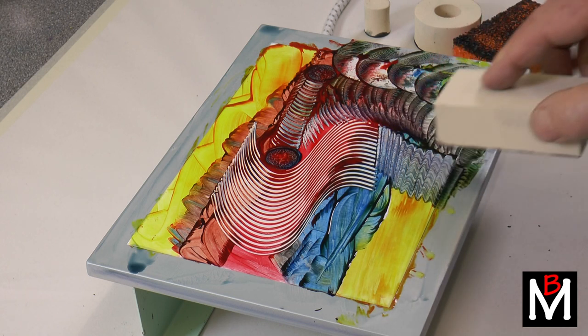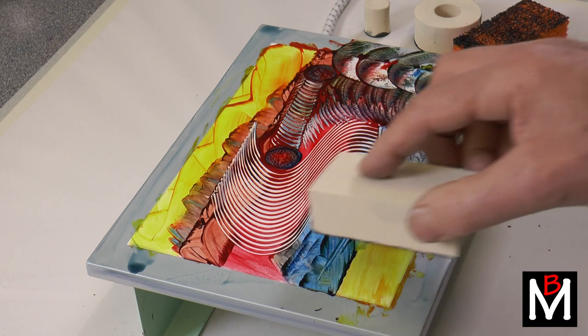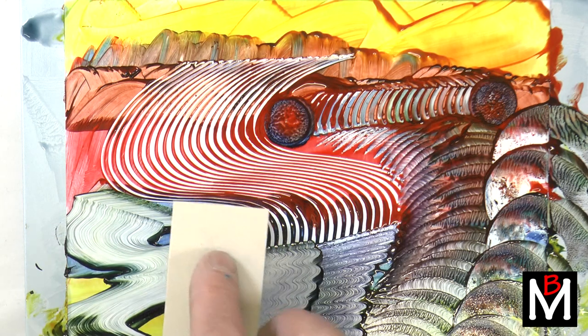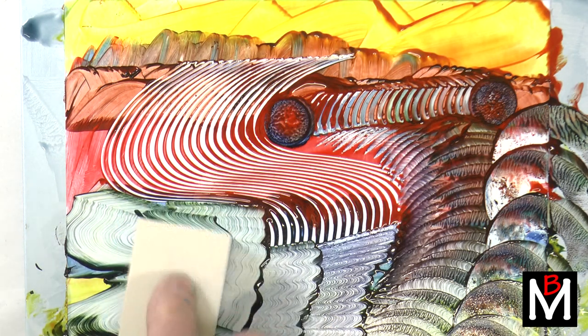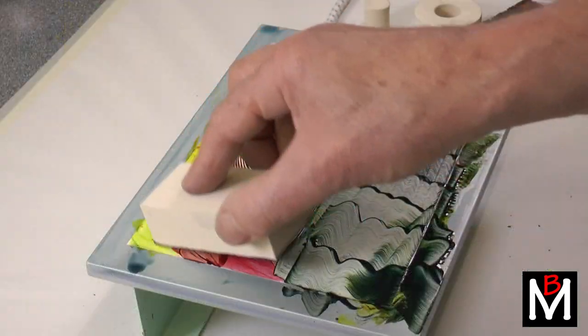This is the white block, rectangular sponge, pulling with that shorter edge. Of course you could use any of the edges actually, I'm just using that one.